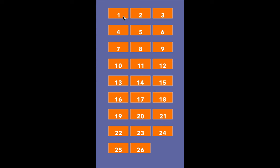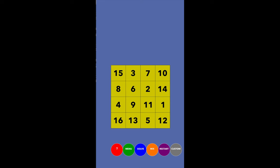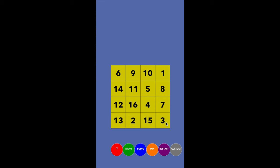Challenge number one is the most basic challenge. We have 16 numbers arranged in a grid and the goal is to get them in order: 1, 2, 3, 4, 5, 6, 7, 8, 9, 10, 11, 12, 13, 14, 15, 16. The move you're allowed to make is clicking on any two numbers to swap their places — here I'm clicking the 10 and the 16, and they swap. I can undo it or do it again to get back to the starting position.